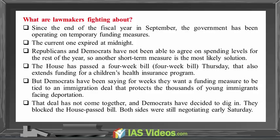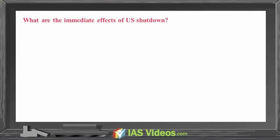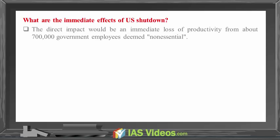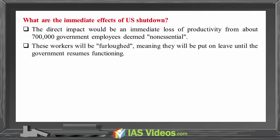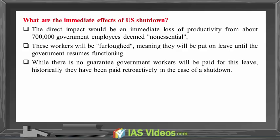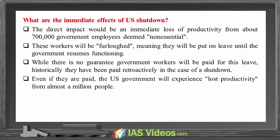Both sides were still negotiating early Saturday. What are the immediate effects of the U.S. shutdown? The direct impact would be an immediate loss of productivity from about 700,000 government employees deemed non-essential. These workers will be furloughed, meaning they will be put on leave until the government resumes functioning. While there is no guarantee government workers will be paid for this leave, historically they have been paid retroactively. Even if they are paid, the U.S. government will experience lost productivity from almost a million people.